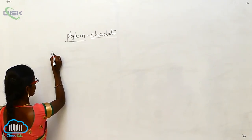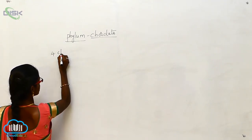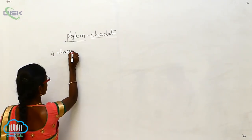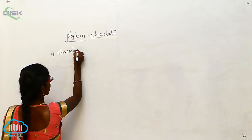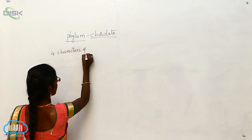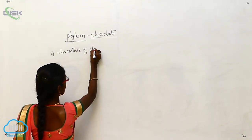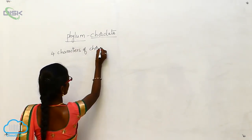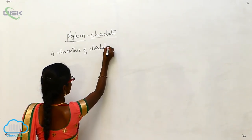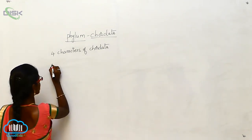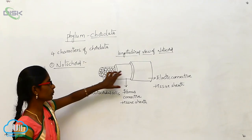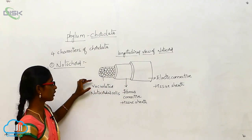Four important characters of Chordata. The first one is notochord.